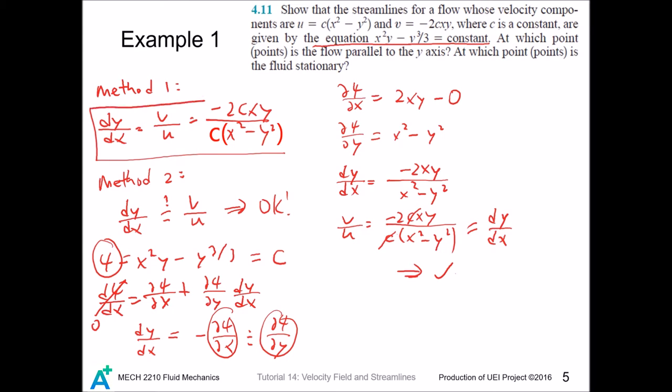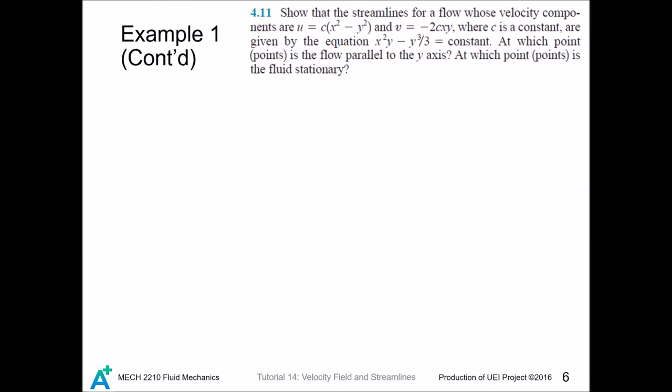Now we continue to complete this example. For flow parallel to y axis, it cannot have the x component, so we take u equals zero, and that implies x squared minus y squared equals zero, and that is (x plus y)(x minus y), so x equals plus or minus y.